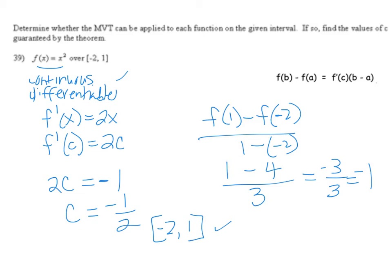Now, what happens if you don't get a value for C? If for some reason it doesn't exist? Well, something went wrong, obviously. Either the function is not continuous or differentiable, or you made a mistake. Sometimes it's hard to tell, because some of these we did when finding critical values, and it was hard to tell that there wasn't a critical value. But those are the reasons why you wouldn't get an answer. On this one we did, so on we go.